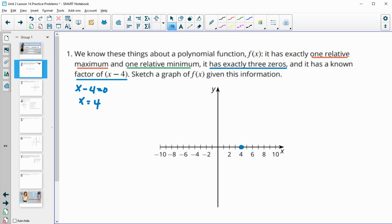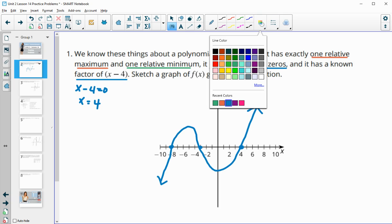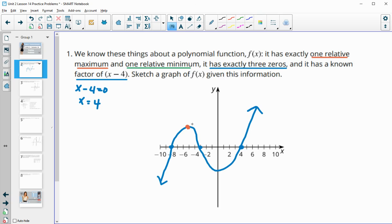Then we need one minimum, one maximum, and two other zeros. I'll put another point here and another point here as my zeros. Then with one relative max and one relative min, I'm going to go up, go down, and then go back up. This gives me the three zeros, the relative max, the relative min, and for sure that zero of x equals 4.